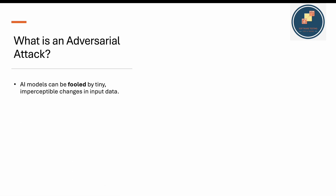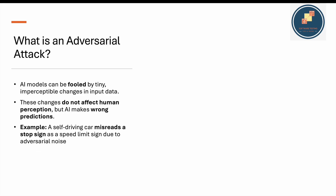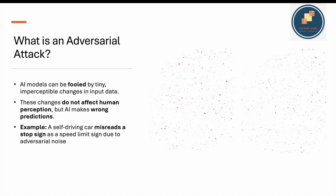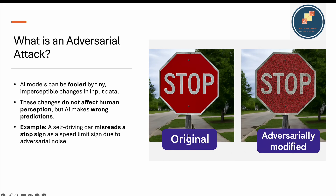What is an adversarial attack? An AI model can be fooled by tiny, imperceptible changes in input data. These changes do not affect human perception, but the AI makes wrong predictions. As humans, we can recognize a panda even if some pixels shift slightly — it doesn't affect us. But for an AI model it can. For example, a self-driving car misreads a stop sign as a speed limit sign due to adversarial noise.